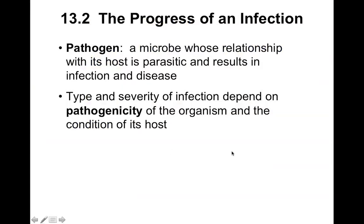Progress of an infection: a pathogen is a microbe whose relationship with its host is parasitic, resulting in infection and disease, and generally a breakdown of tissues. That breakdown releases more nutrients which the pathogen absorbs. Type and severity of infection depends on the pathogenicity of the organism and the condition of its host. Pathogenicity describes how good of a pathogen that microbe is and what it's doing to achieve that. The pathogen can adjust its virulence factors to become more pathogenic.